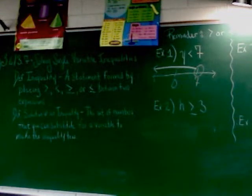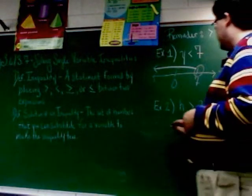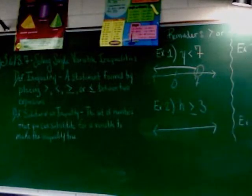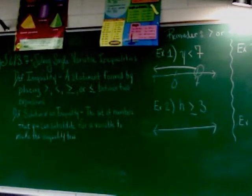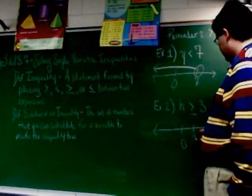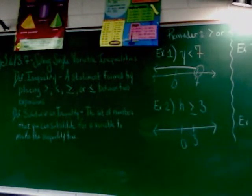All right. So let's try h is greater than or equal to three. So, number one, what two things do I have to put on the number line? What two numbers go on this number line? Corrine: Zero and three. Zero and three. Always zero. And the number in question is three.